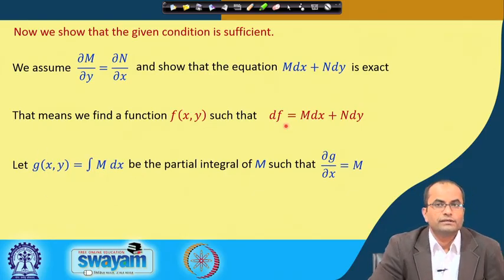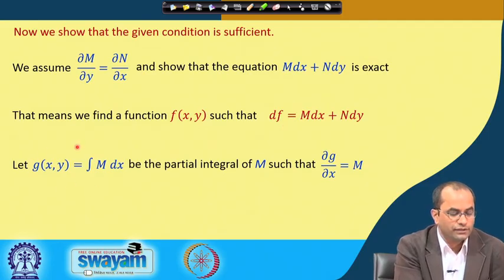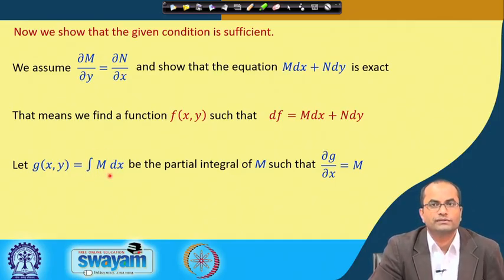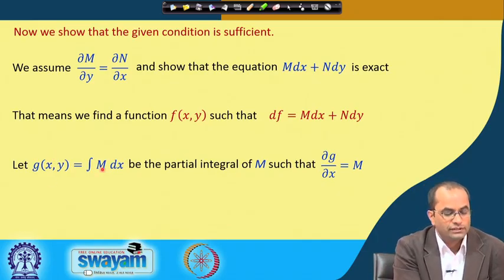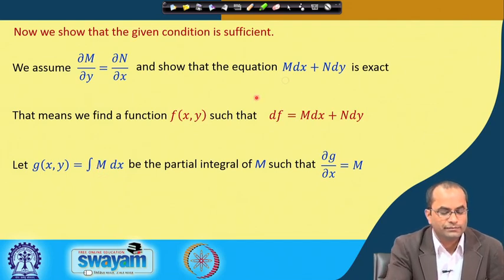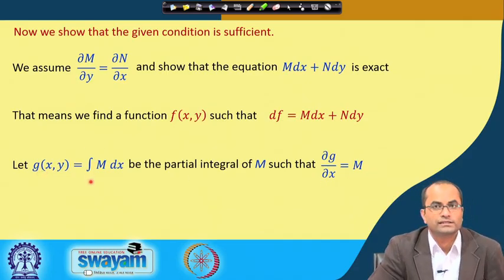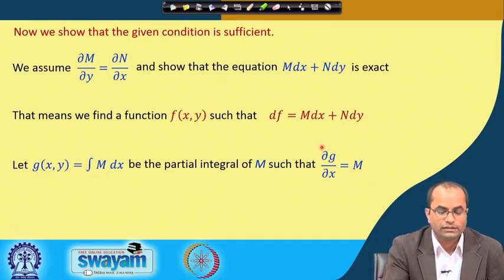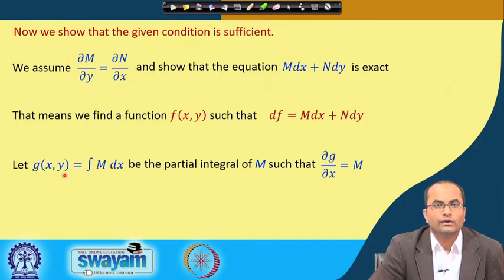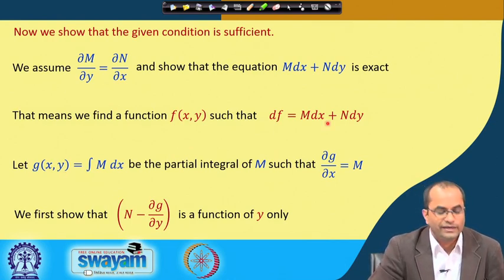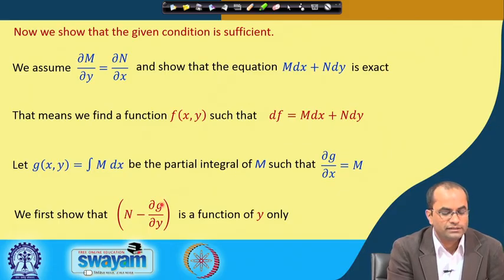For the construction of such a function f, we take a function g(x, y) as the partial integral of M dx. This means ∂g/∂x = M by definition. Having this g, we will first show that n minus ∂g/∂y — the difference between N and this constructed function's y-derivative — is a function of y alone.